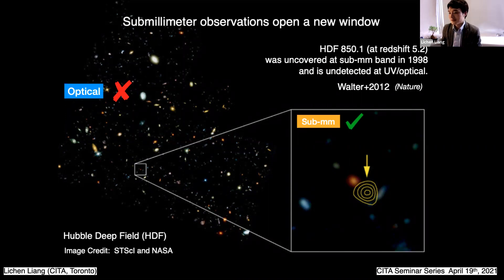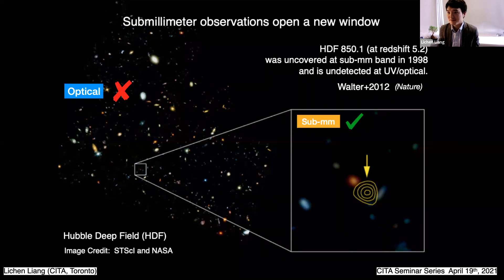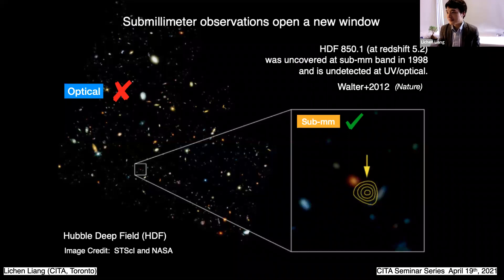For example, this object was uncovered by a sub-millimeter telescope in the Hubble Deep Field, but ironically it has never been detected by HST itself. For a long time we knew nothing about this object. Only until about 10 years ago, for the first time we observed the CO-line emission from it through CO spectroscopy, and we learned that this object is as early as redshift five, within one billion years of the Big Bang.